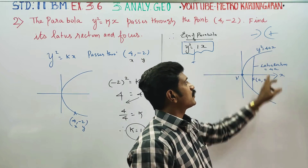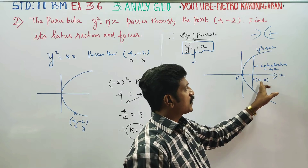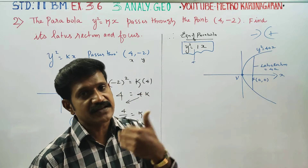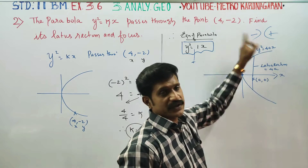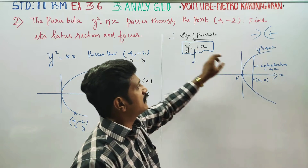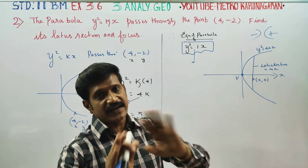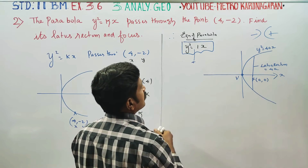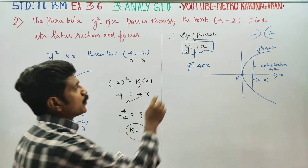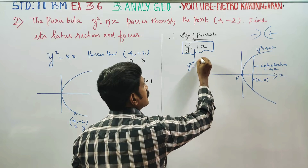The parabola formula is y² = 4ax. The focus is at (a, 0) and the latus rectum is 4a. Matching our equation y² = x with the standard form y² = 4ax, we compare: 4a corresponds to 1.